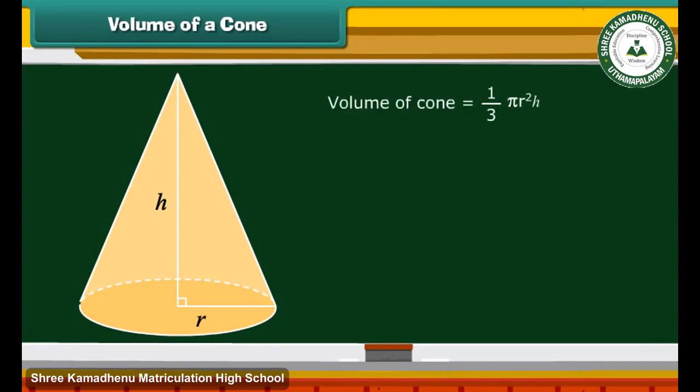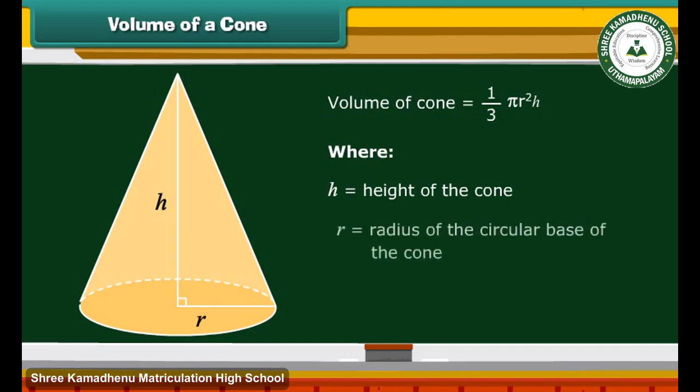Volume of a cone is simply given by 1 by 3 pi R square H, where H is equal to height of the cone and R is equal to radius of the circular base of the cone.